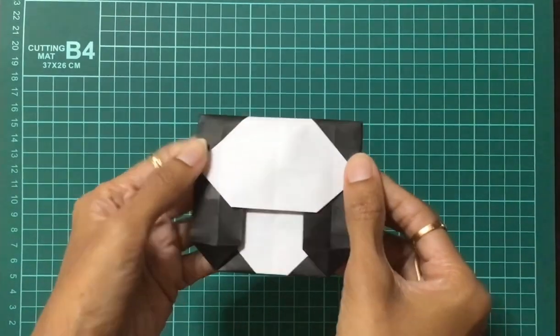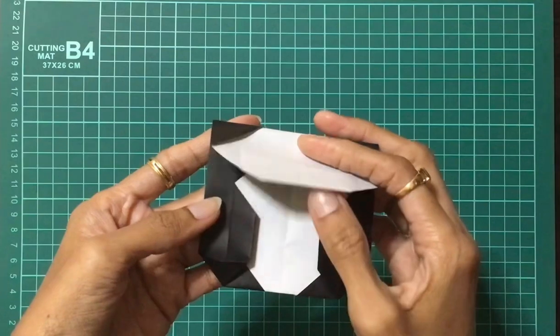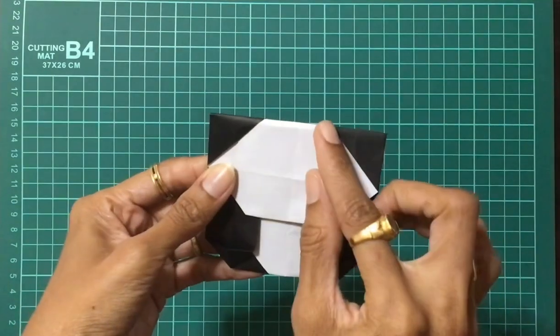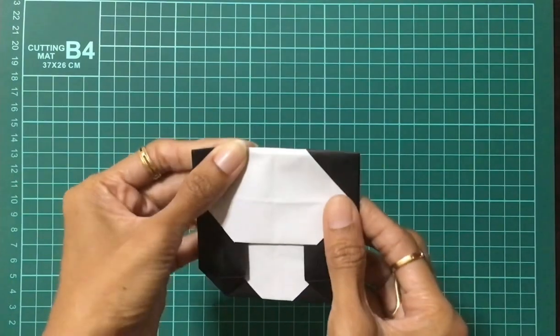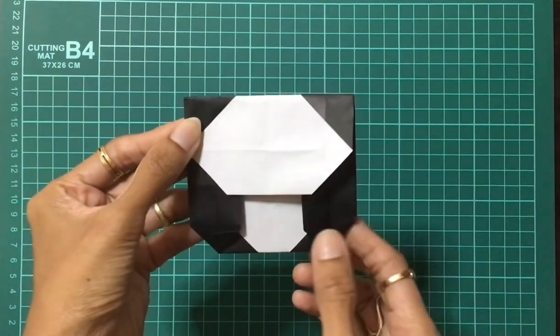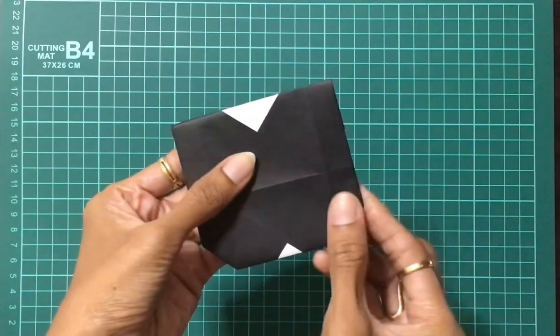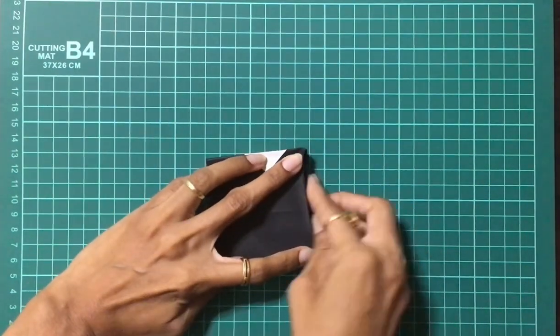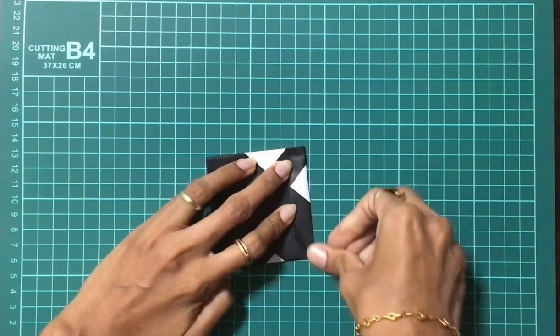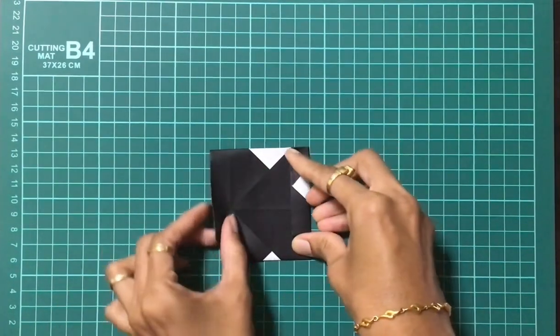Inside triangle crease line you can see here, that is going to be the ear of the panda, these small triangles. So turn the model and fold on this crease line. Repeat the same thing on the other side too.